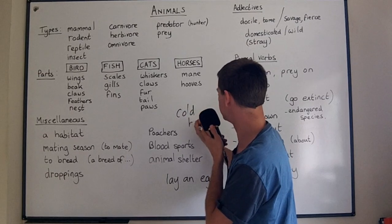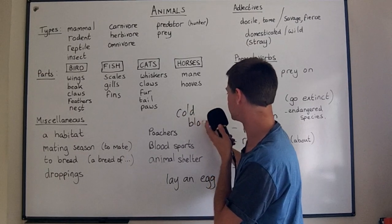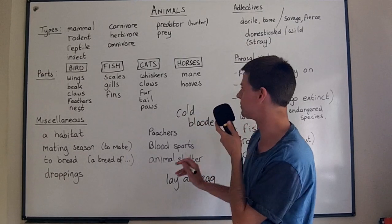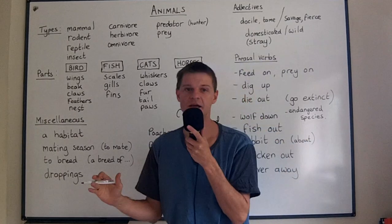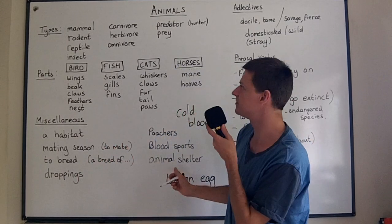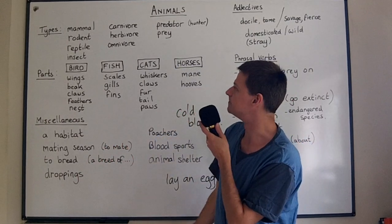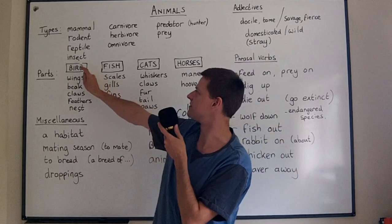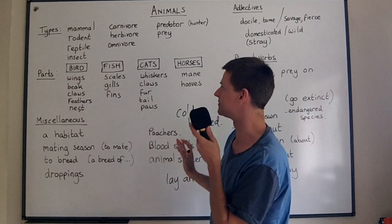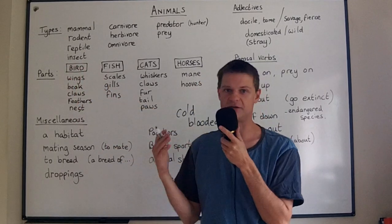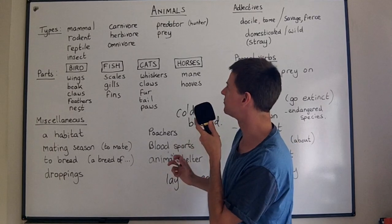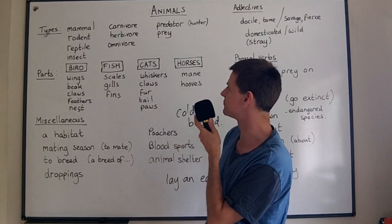On to insects. Insects are very small creatures which often have six legs, but not always. Most of you know what insects are — they include ants, bees, and wasps, these kind of creatures.